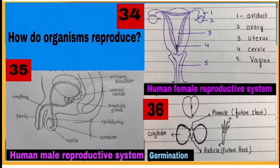34 and 35 are human female and human male reproductive systems, while 36 is showing the germination of seed which has future embryo.